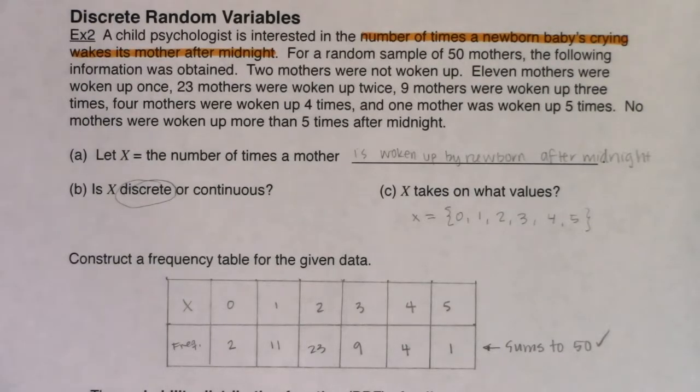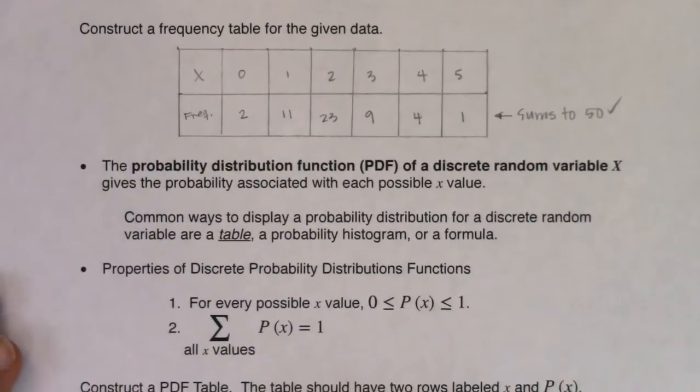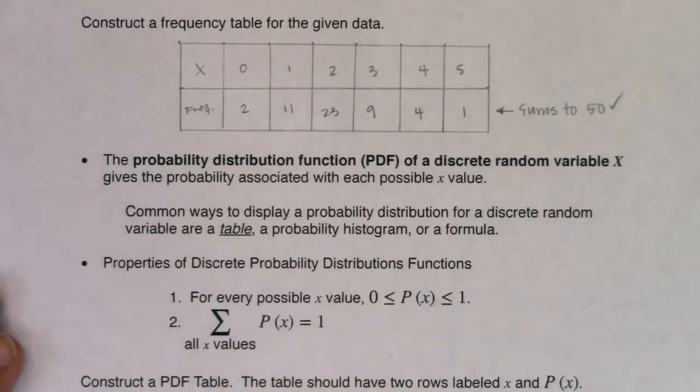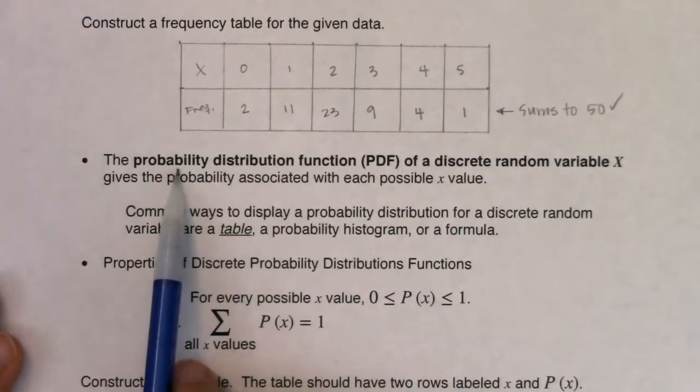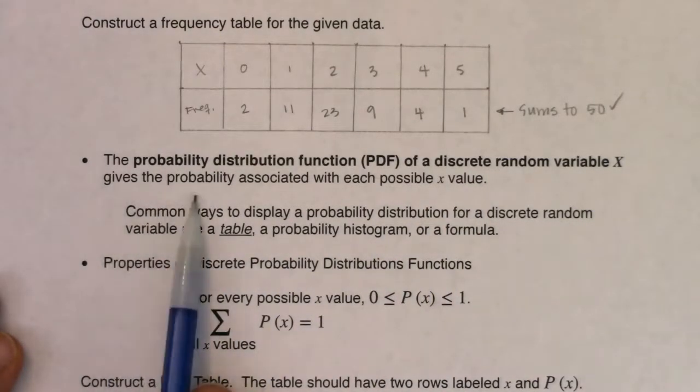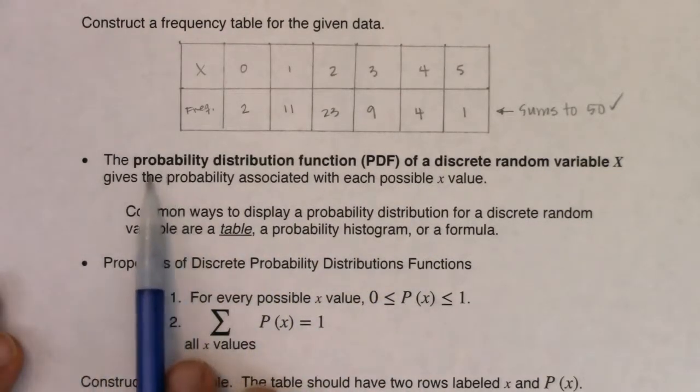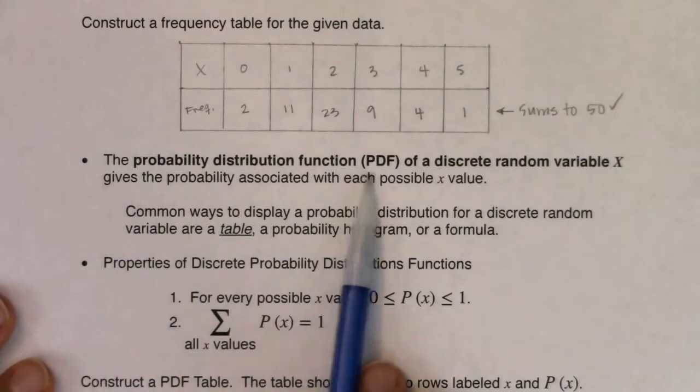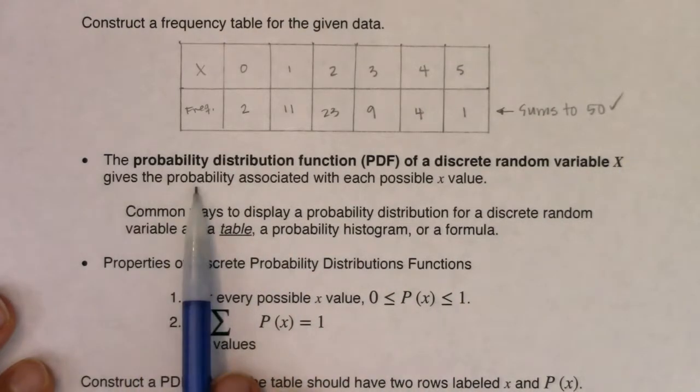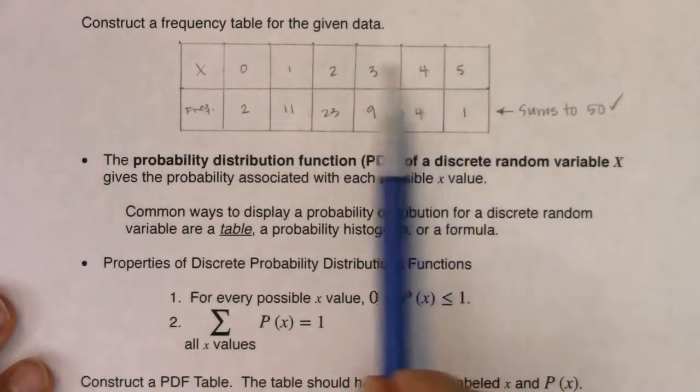But what we want to switch from, now that we've gone through chapter three and made it through probabilities and related those to relative frequencies, we're going to switch over from something called a frequency table to really the relative frequency table. But it's going to get a fun new name: the probability distribution function or PDF.